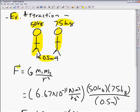Okay, so our equation for the force of gravity is G, the gravitational constant, M1 times M2 over R squared.